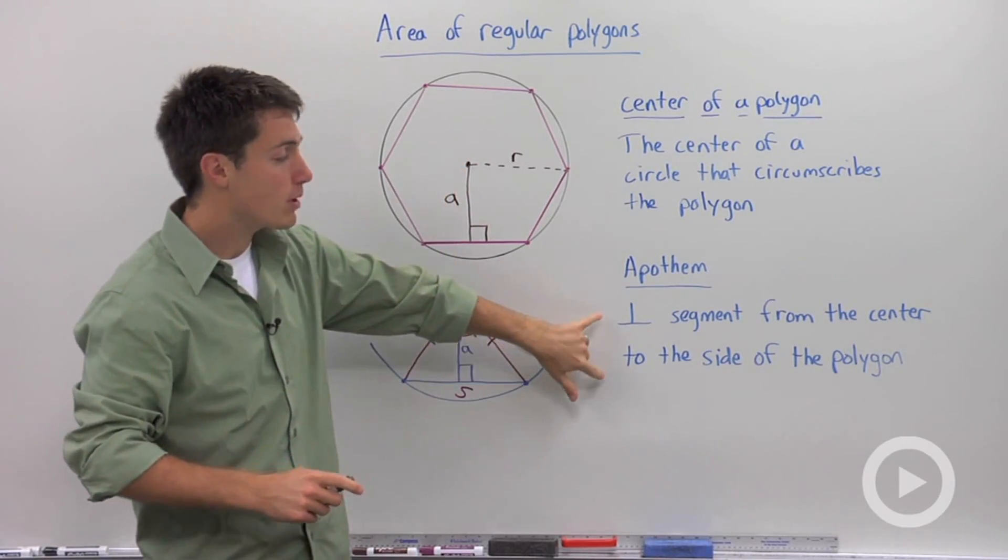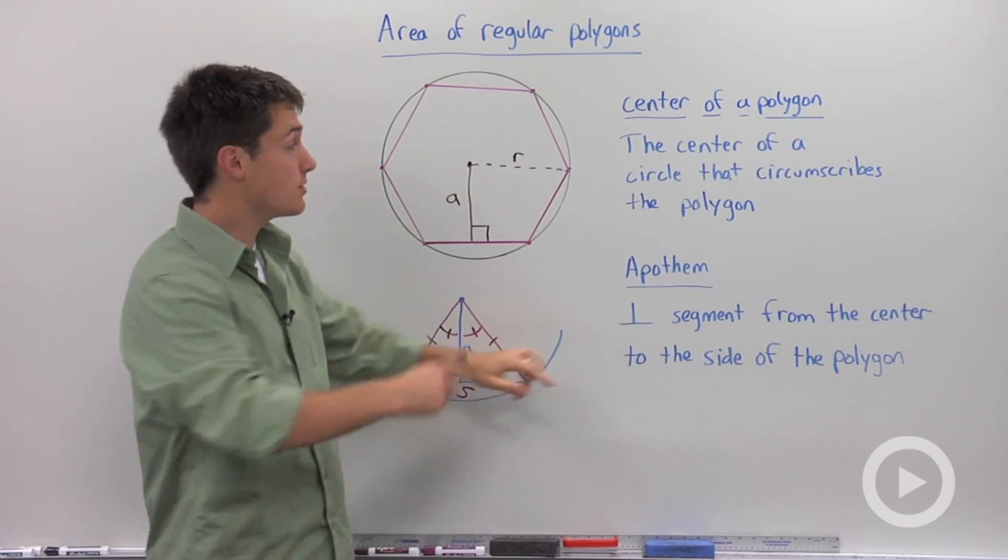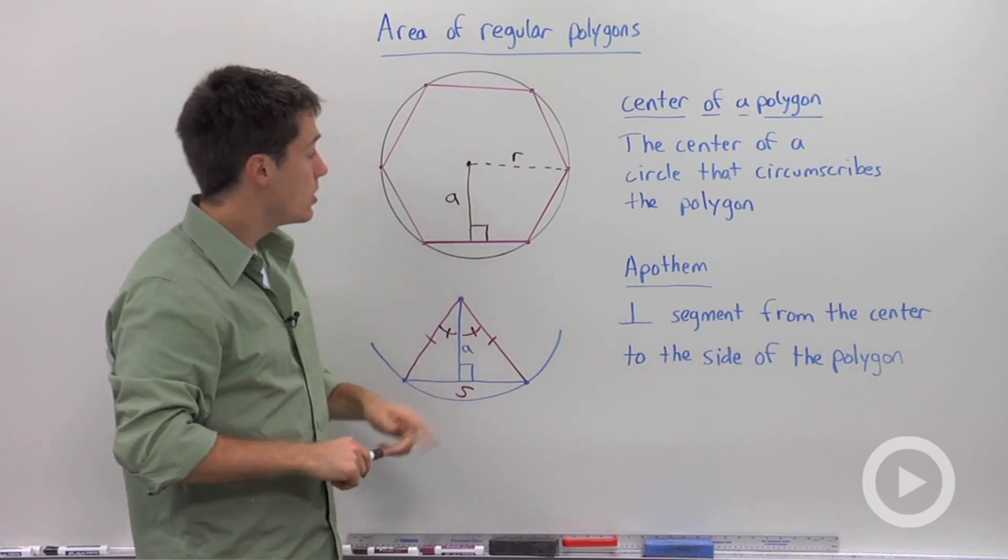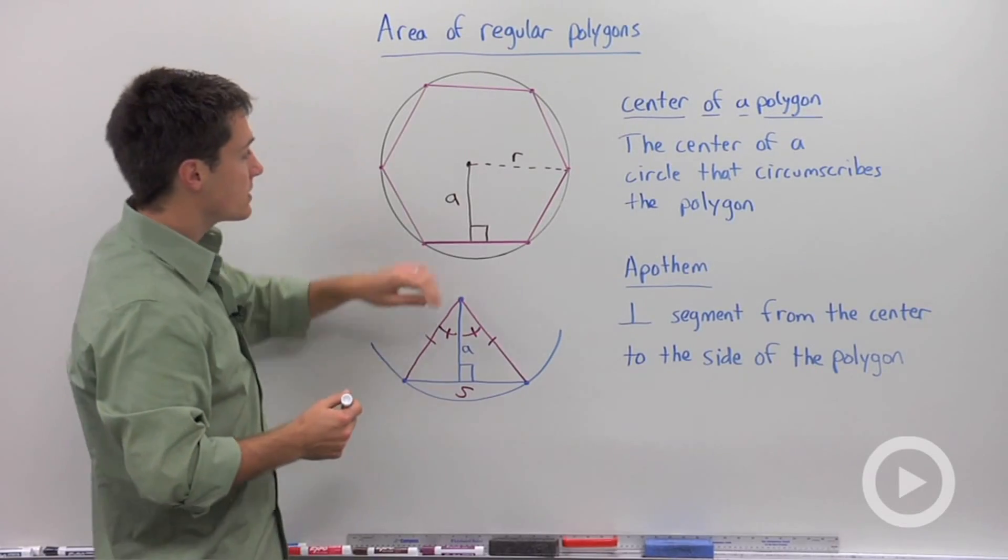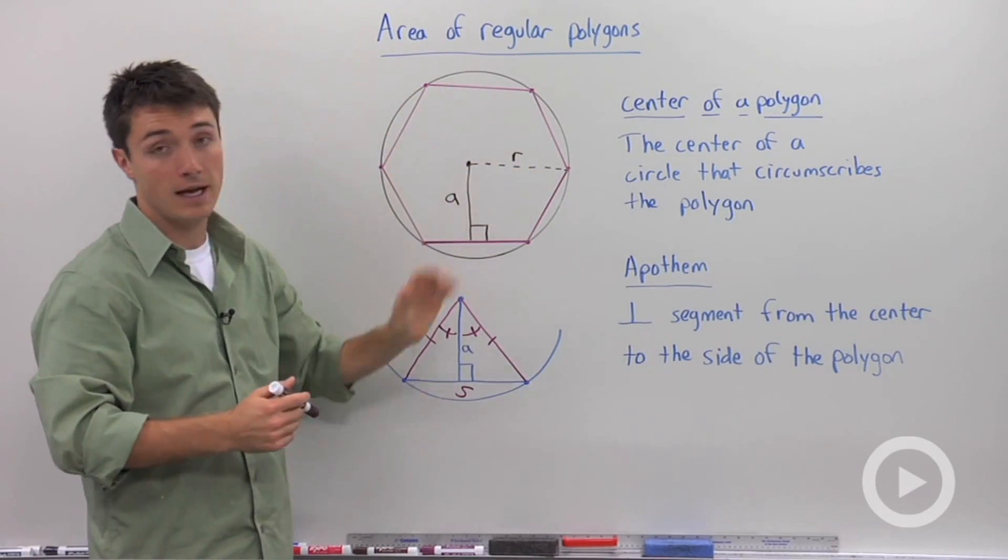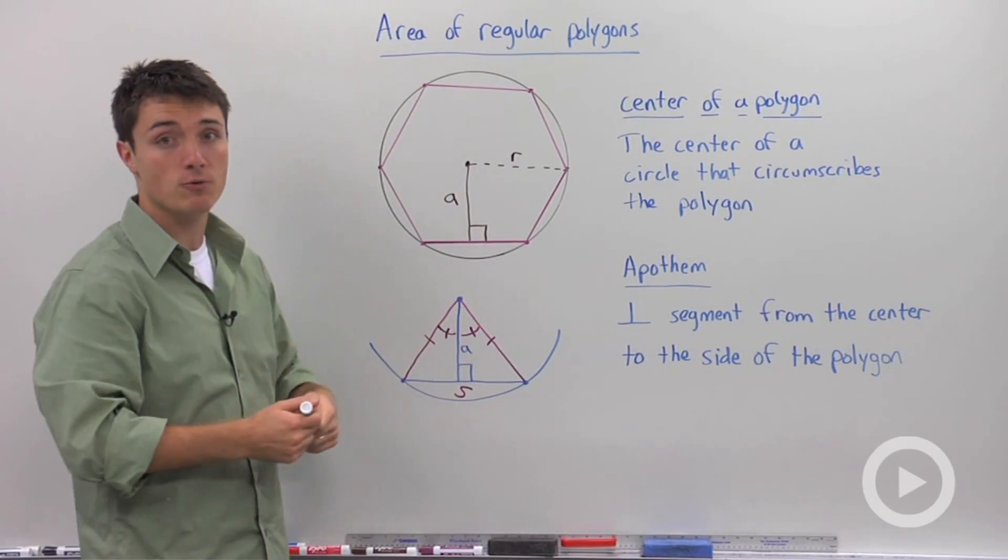Now an apothem is a perpendicular segment from the center of the circumscribed circle to one of the sides of your polygon. Now the reason why this is important is because if we want to calculate this hexagon, so again this will apply to any regular polygon.